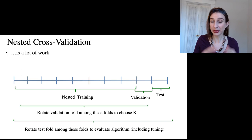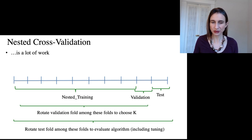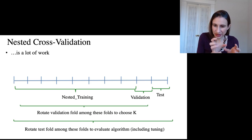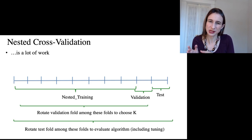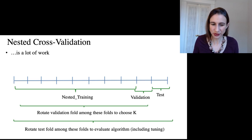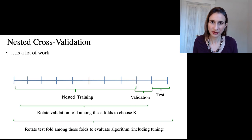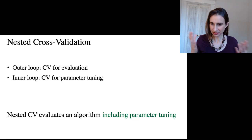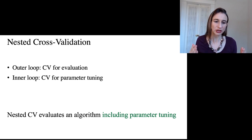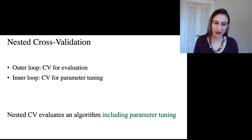You might also reduce the outer loop from tenfold down to fivefold or threefold. Also, if you have a fairly small dataset and divide it into many folds, your training sets and evaluation sets become quite small, and the results don't tend to be trustworthy. So people are careful to make sure there's enough data in each test fold to get a good evaluation. In summary, nested cross-validation has an outer loop for evaluation and an inner loop for parameter tuning.